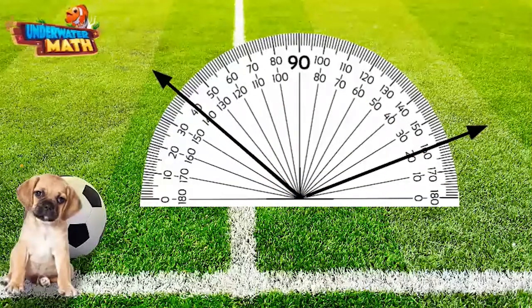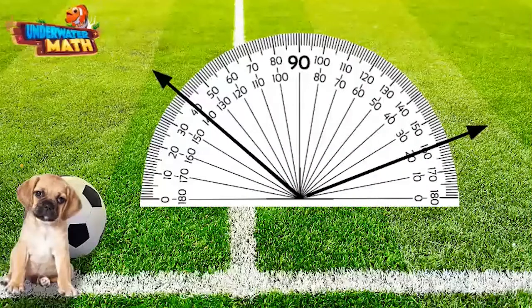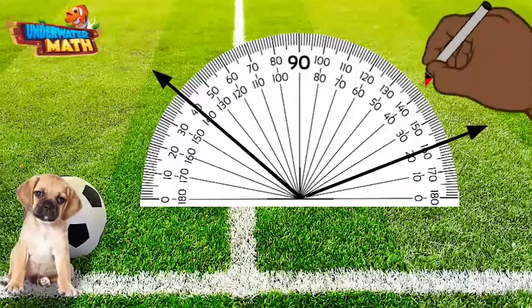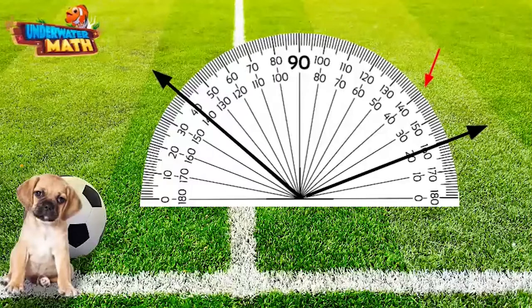Our ray points to this 140 degrees, and the distance between the two rays is the angle measure: 120 degrees. This makes sense because a 120 degree angle is obtuse. If we used the other 140 degree point, we would have made an acute angle.